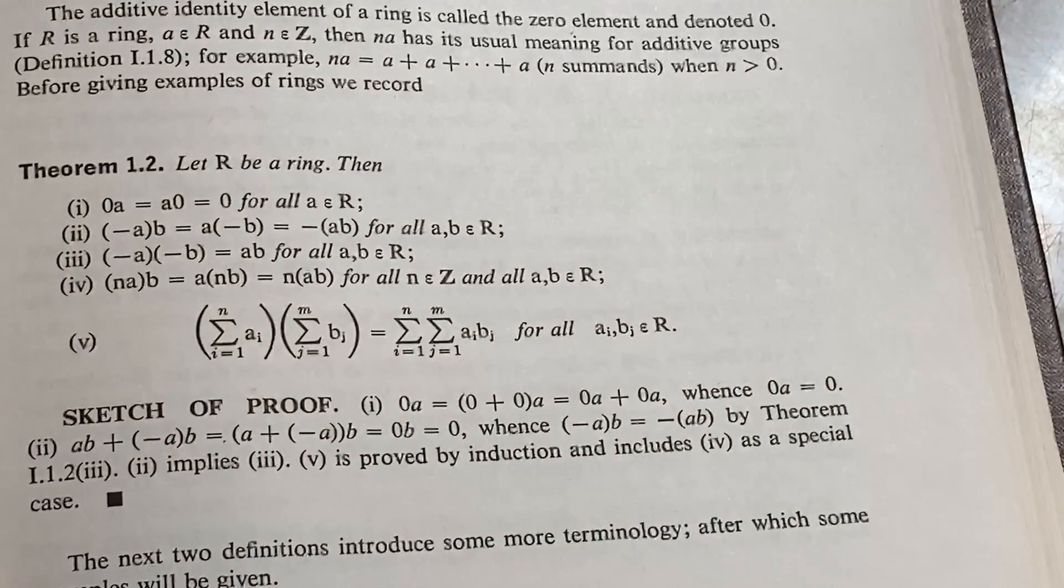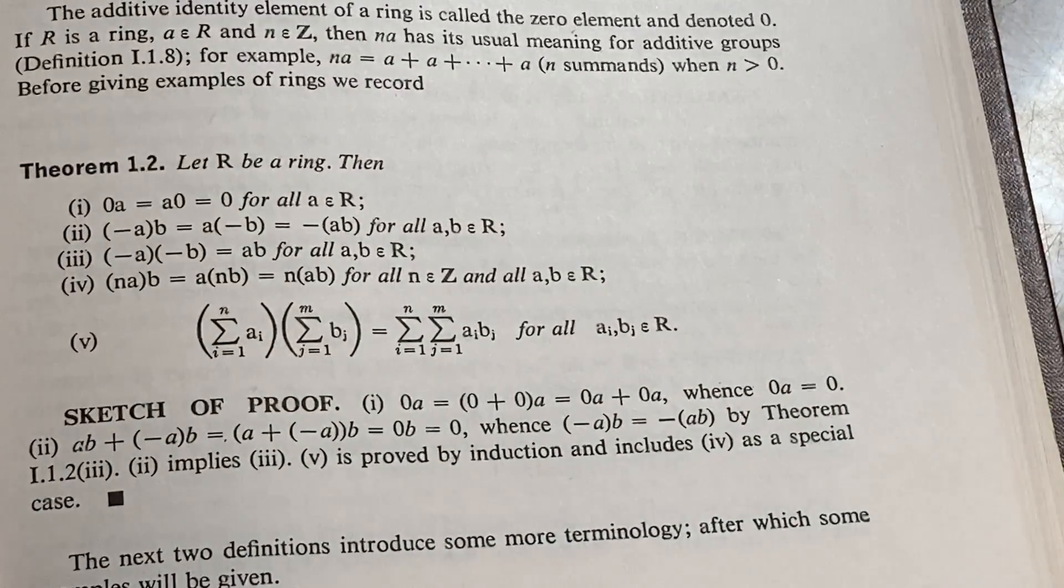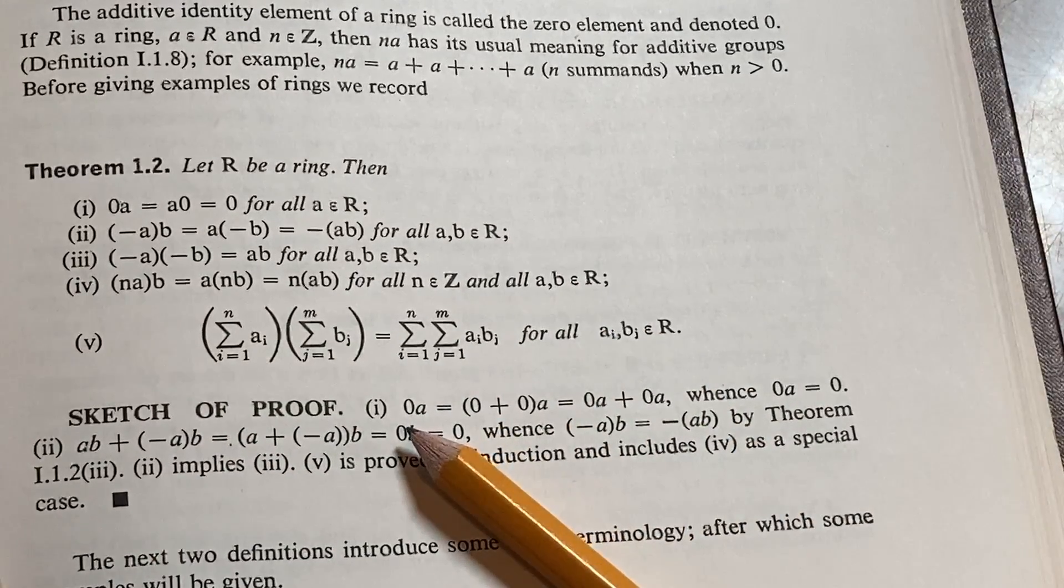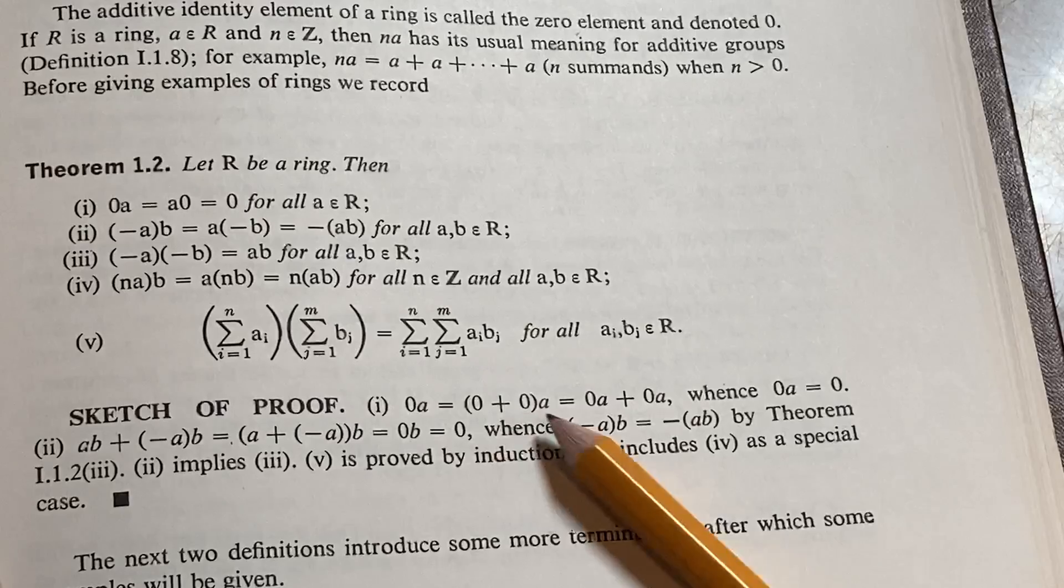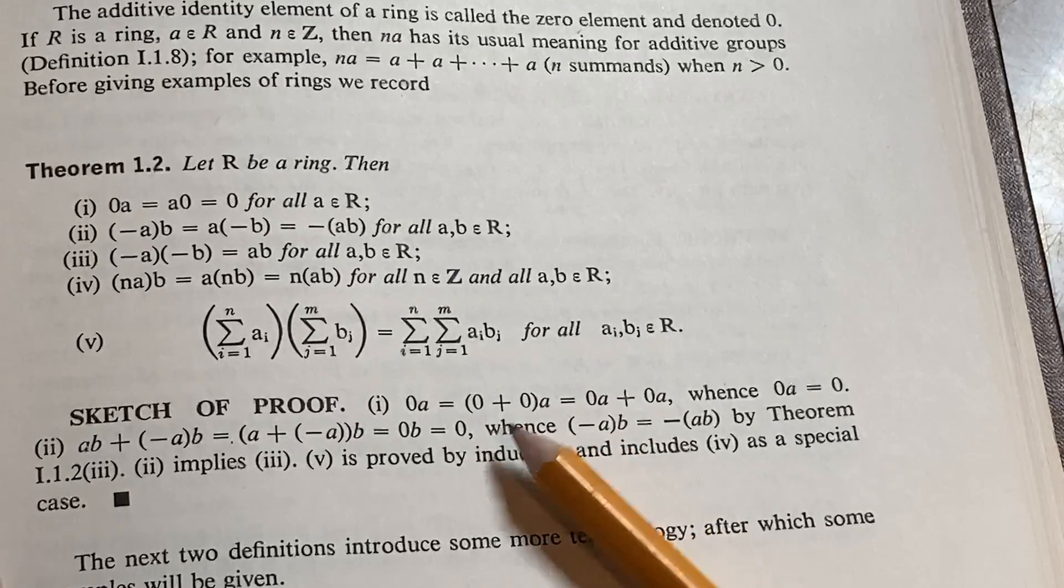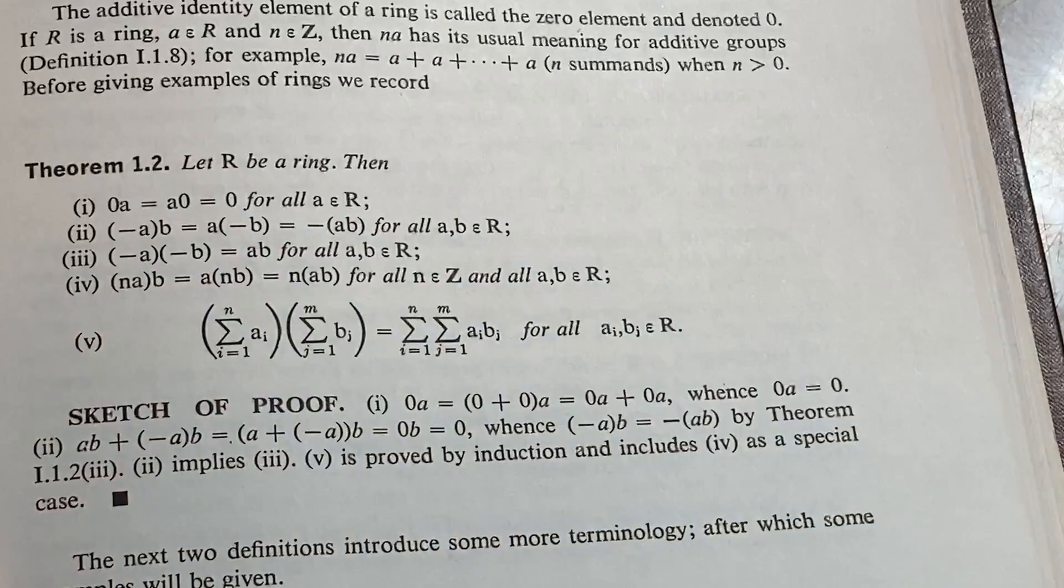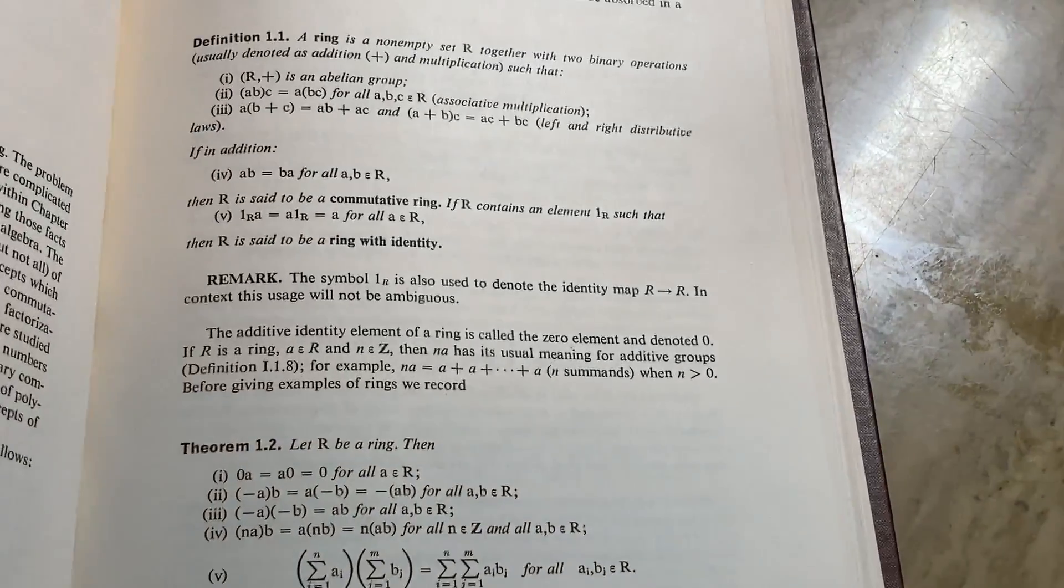So we have 0a, and that's equal to (0 + 0) times a. So you might say, okay, well obviously, right? 0 + 0 is equal to 0. Yes, but why? So let's go back to the definition which is up here so you can get a good look at it.